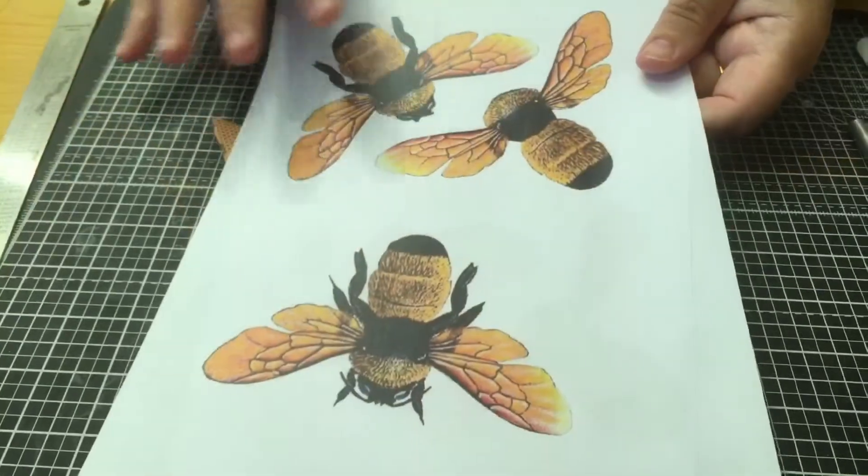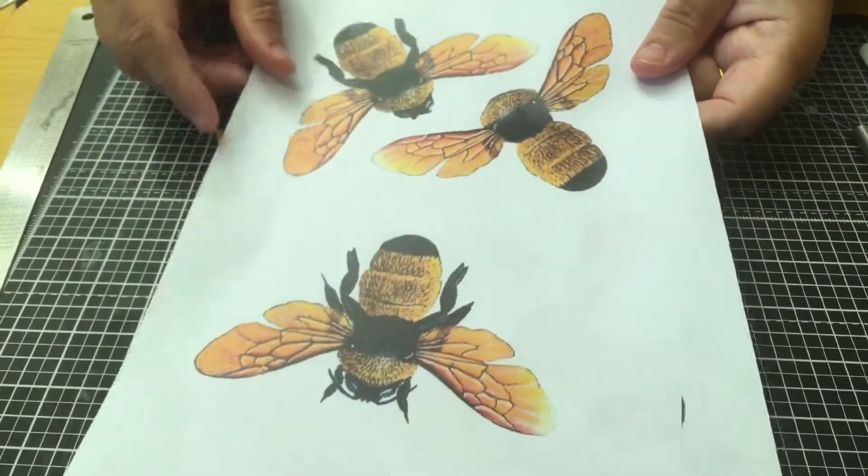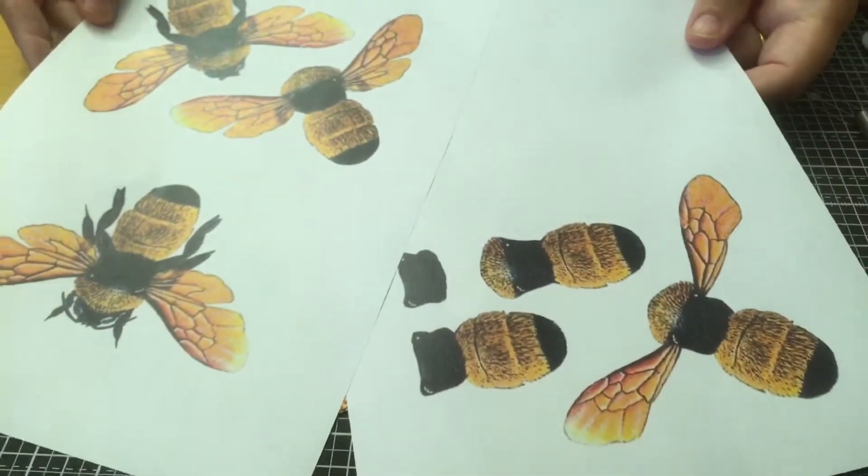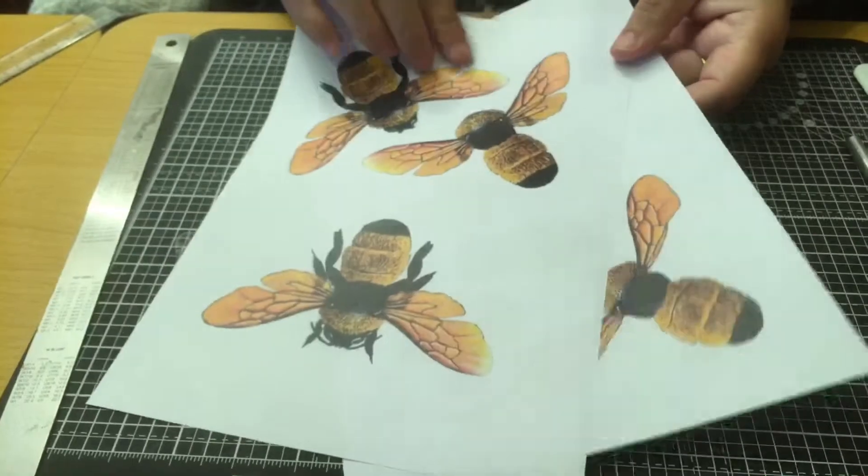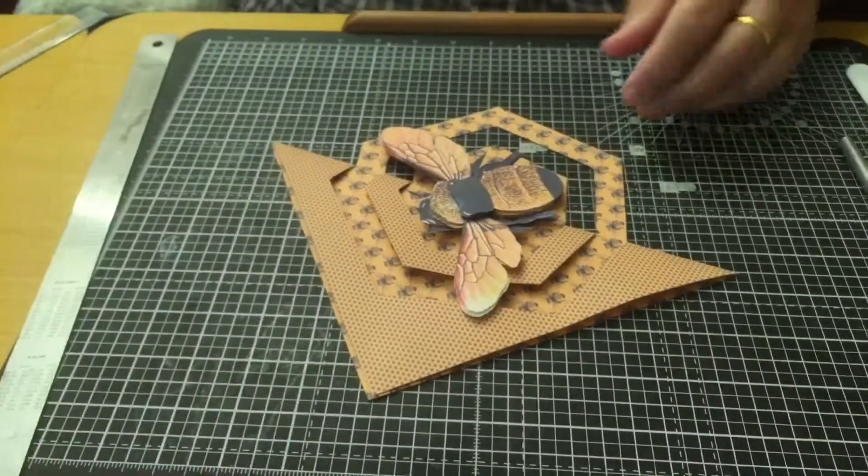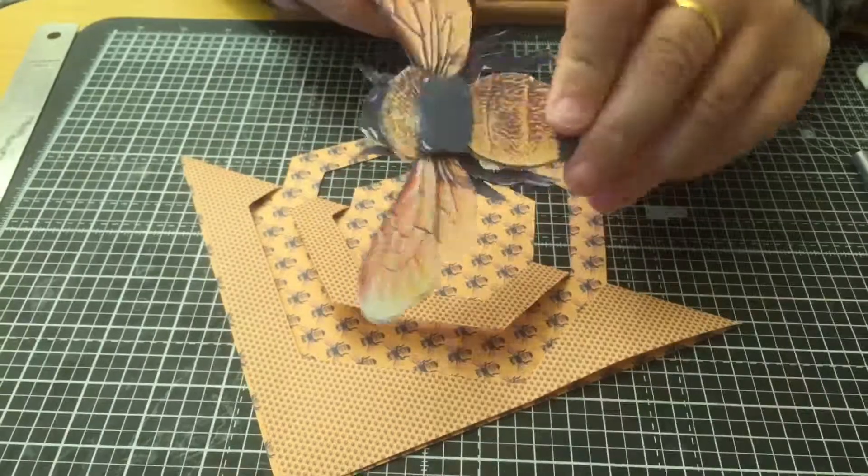Now I'm going to decorate this card with the 3D bee. You print out the pages that you need and just cut them out and layer them using foam tape. You get a nice 3D bee like that—you can varnish it if you wish.